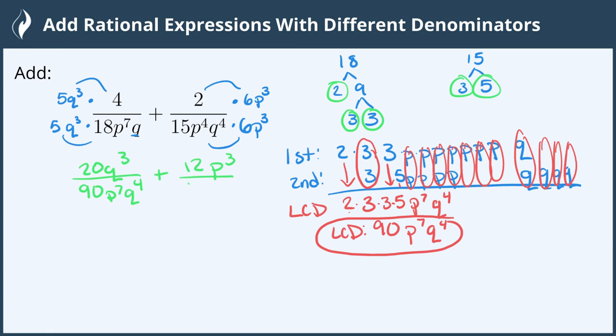15 times 6 is 90 for our second denominator. p to the 4th with 3 more p's gives us p to the 7th and then we have 4 q's so q to the 4th. Now that we have a common denominator we can go ahead and add the numerators.